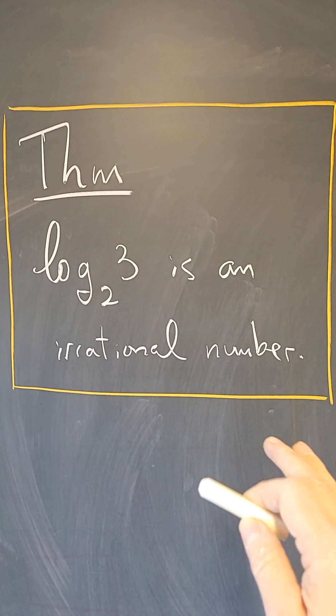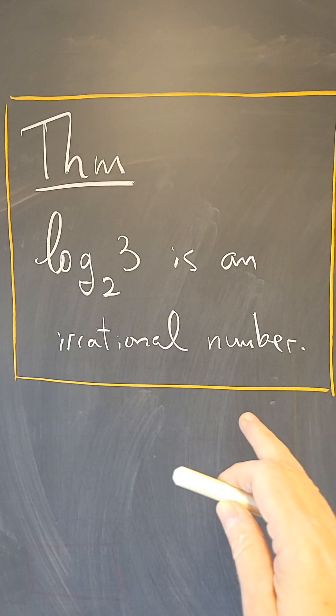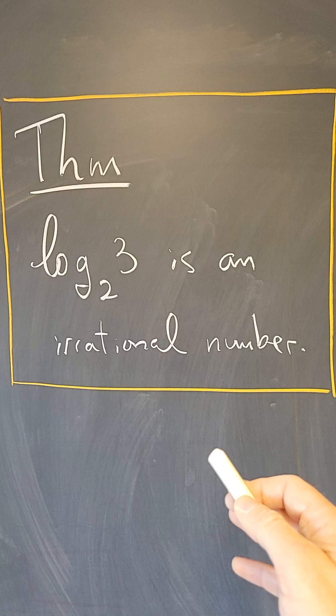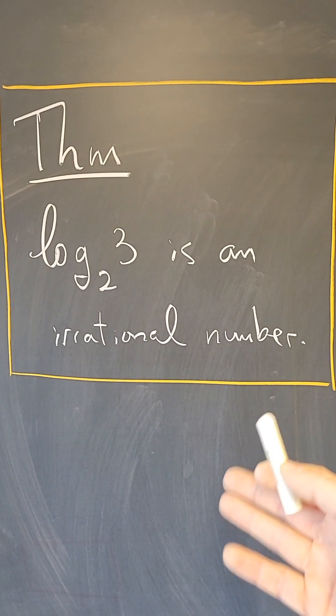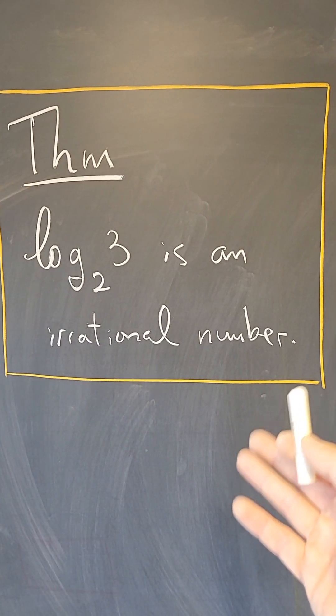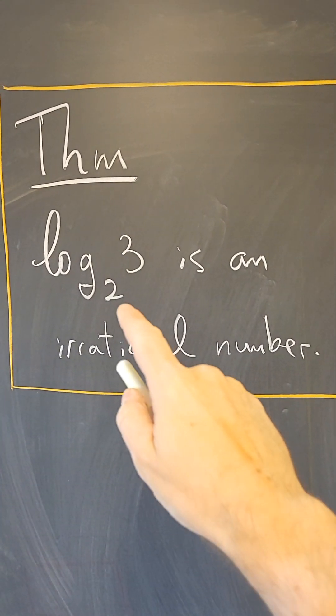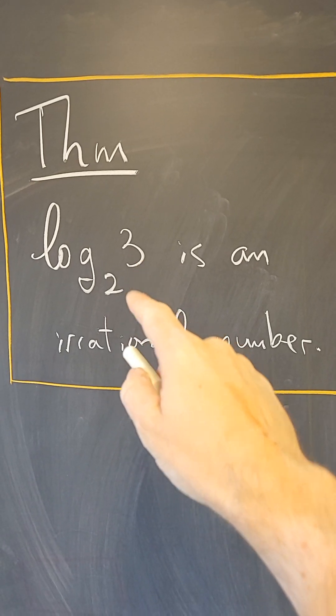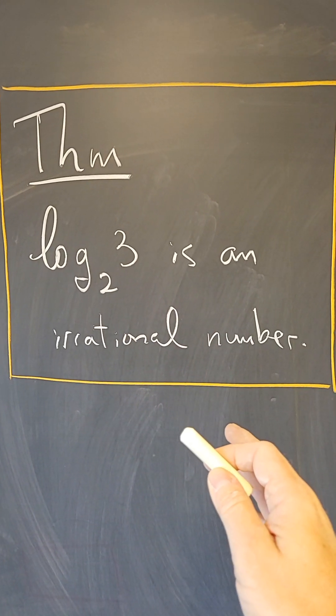Proving that a real number is irrational can be quite hard, but there are some examples, like the square root of 2, that are easy to show are irrational. That's also the case with log base 2 of 3, so let's see a proof.